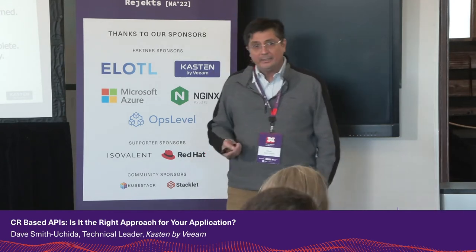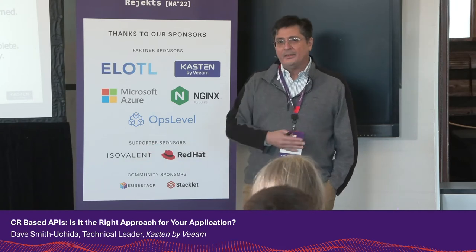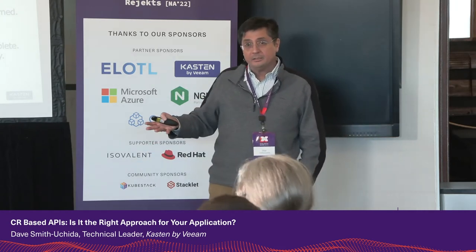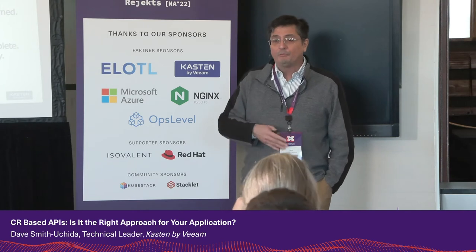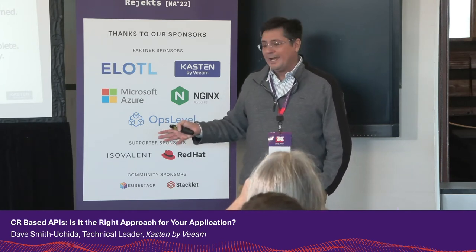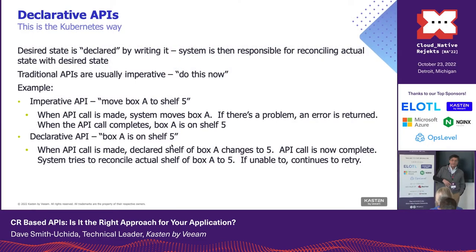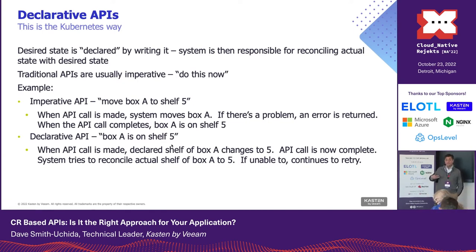In a declarative API, you'd say 'box A is on shelf five,' and then kind of wander off. The system is responsible for getting that box there, and it may retry — say it's controlling a robot, the robot fell over, somebody fixed it, let's try again. That's all happening in your reconciliation loop inside the controller. It's not the client watching and saying 'I told you to move it, that failed, let me retry, let me do an alert.' That's a big difference.